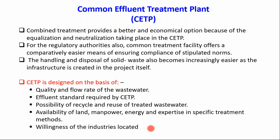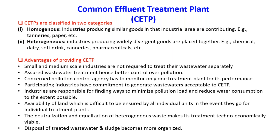CETP design also considers availability of land, manpower, energy, expertise in specific treatment methods, and willingness of the industries. In the WAPI area there is a CETP plant, in Tani there is a CETP plant, and in Nashik the CETP has been sanctioned and construction is ongoing. CETP is classified into two categories: homogeneous and heterogeneous. Industries producing similar goods contribute similar effluent characteristics — that is called homogeneous. For example, ten textile industries in the same area produce effluents with nearly similar characteristics.